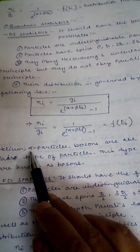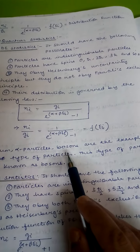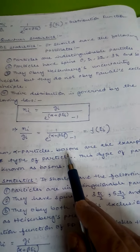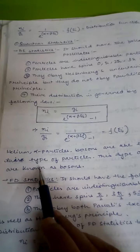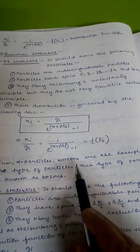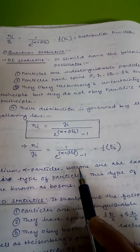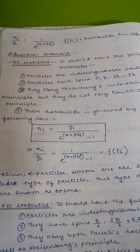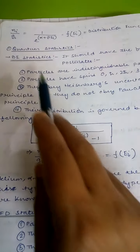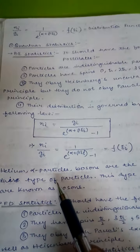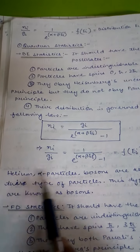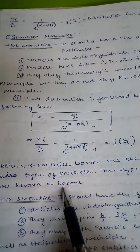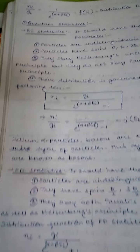Examples of particles obeying BE statistics include helium and alpha particles. The particles obeying BE statistics are called bosons. So helium and alpha particles are examples of bosons.